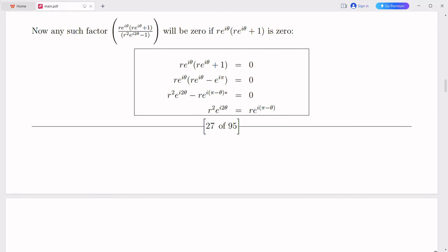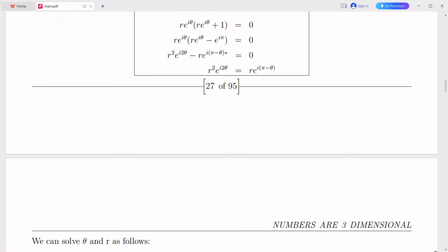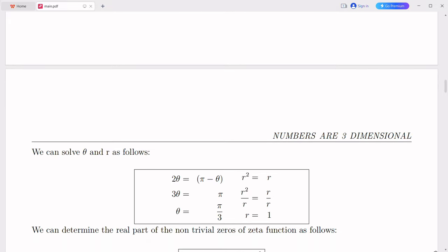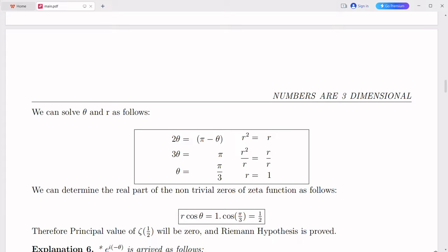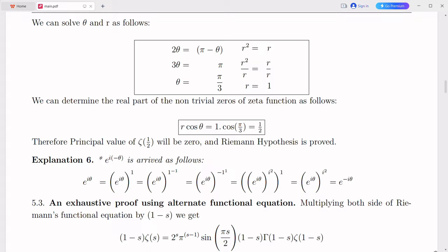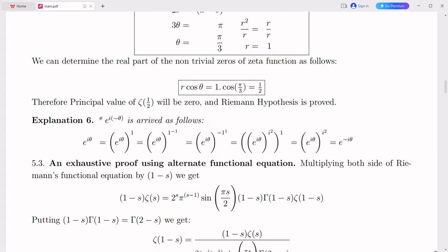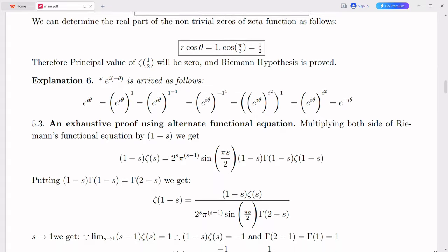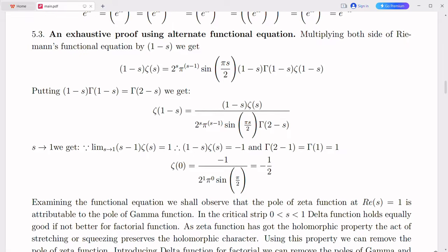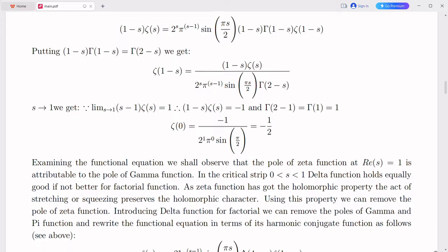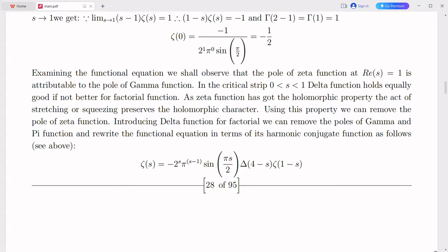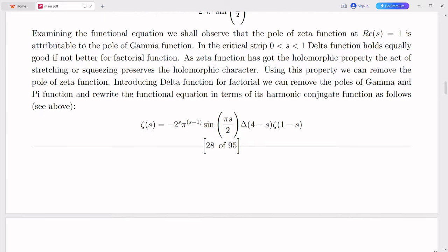The integration of imaginary numbers with the real number line would have practical implications for numerous technological applications. Complex numbers are crucial in electrical engineering, signal processing, control systems, and telecommunications. By extending the real number line, it would provide a more comprehensive mathematical framework for analyzing AC circuits. Complex numbers would continue to play a crucial role in representing voltage and current phasors accurately. It would enable engineers to perform complex calculations involving impedance, reactance, and power factor more efficiently. This, in turn, would contribute to the design, analysis, and optimization of electrical circuits and systems. By extending the real number line, engineers and technologists could develop more sophisticated algorithms, improved signal processing techniques, and advanced control systems. It could pave the way for more efficient digital communication and advanced image processing, as well as breakthroughs in artificial intelligence.